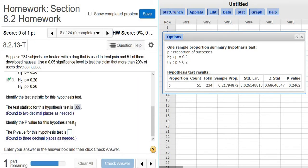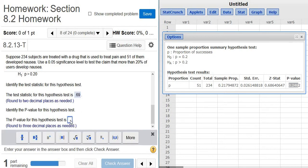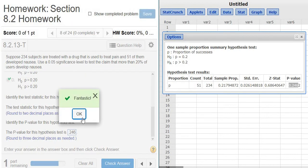Identify the p-value for this hypothesis test. Here's our p-value right here, 0.2462. It wants us to round it to three decimal places, so 0.246.